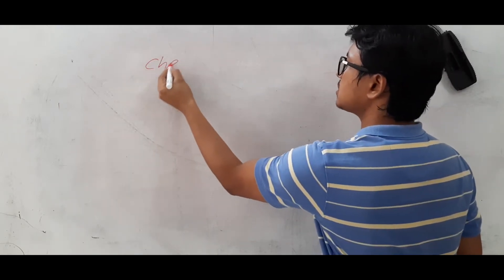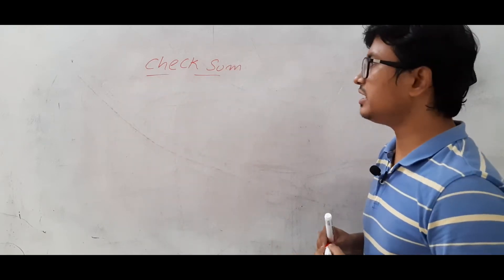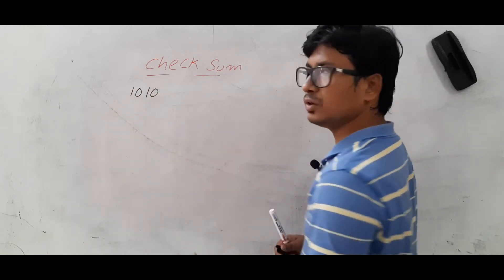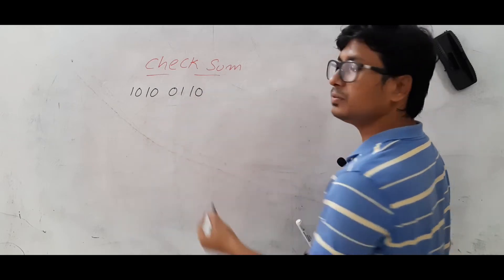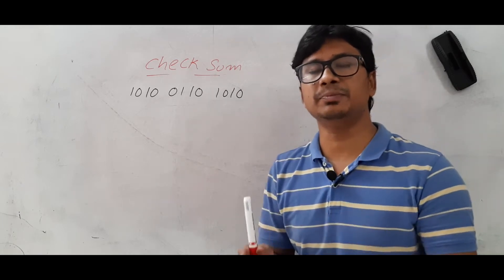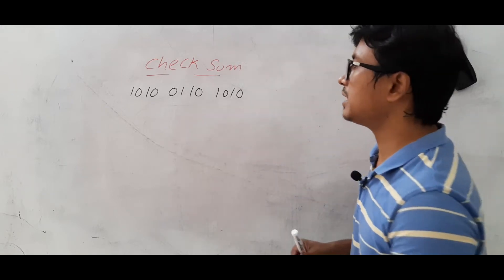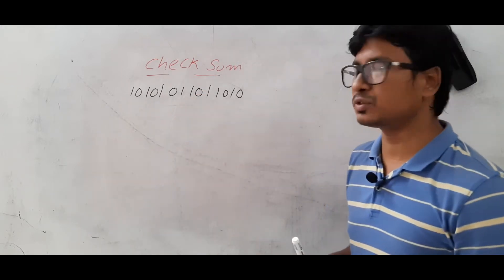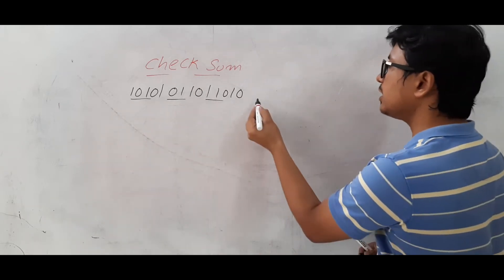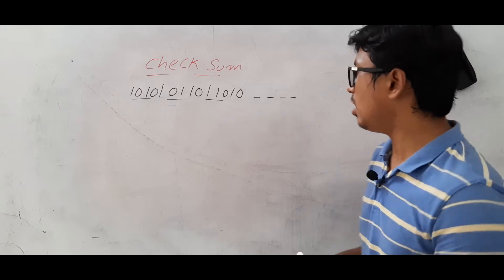In the checksum mechanism, let's say the data you want to send is 1010 0110 1010. The checksum can be an 8-bit, 16-bit, or 32-bit checksum. For this example, we will use a 4-bit checksum. So you consider every four bits as one block and then compute the checksum bits.